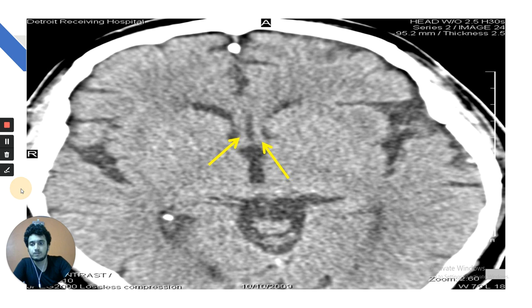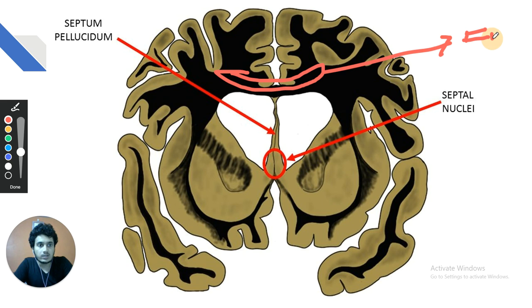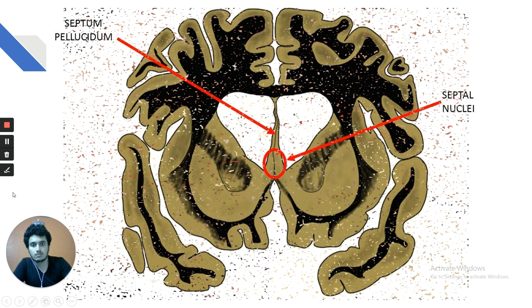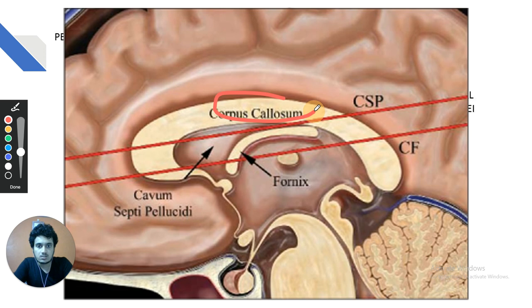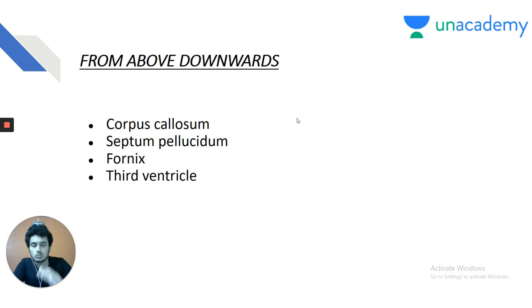In coronal section also: corpus callosum is visible above, septum pellucidum below it, then the fornix. The corpus callosum fibers connecting the frontal lobes form the forceps minor, and those connecting the occipital lobes form the forceps major. Just lateral to the third ventricle is the thalamus. This orientation — corpus callosum, septum pellucidum, fornix, third ventricle — must be memorized.